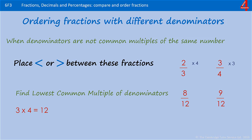Now the denominators are the same, we can see which is smaller than the other. 8 twelfths is smaller than 9 twelfths. Remember that we have to apply the symbol to the first two fractions — the ones in the original question. 2 thirds is smaller than 3 quarters.